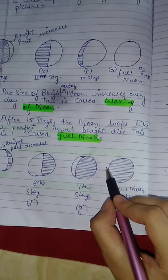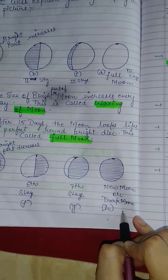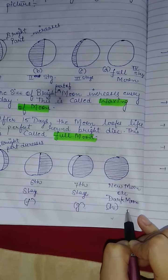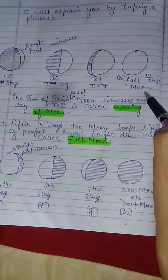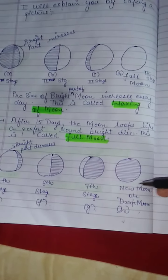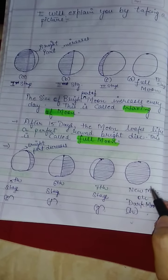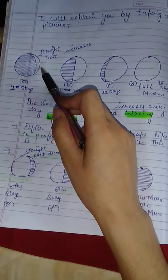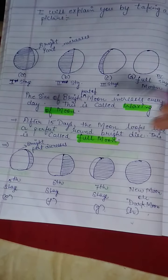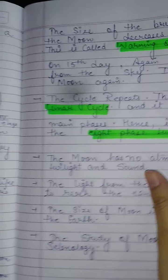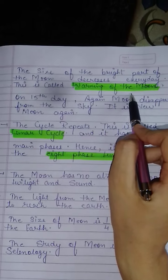Eventually the Moon becomes invisible and we have new moon or dark moon again. The whole cycle goes: we start with new moon, the bright part increases, reaches full moon, then decreases. The size of the bright part of the Moon decreasing every day is called waning of the Moon.